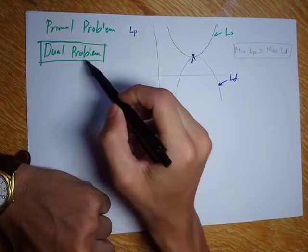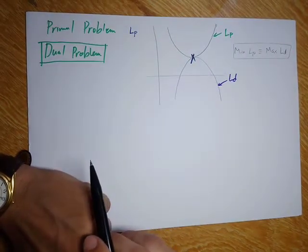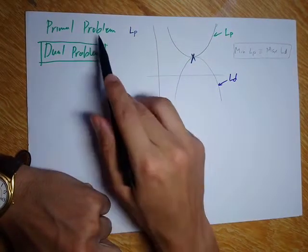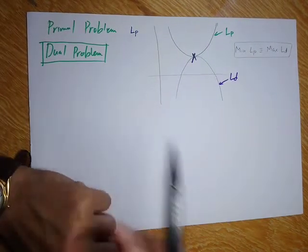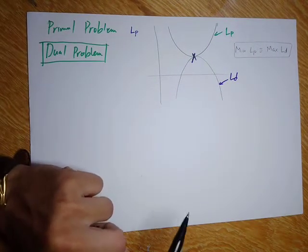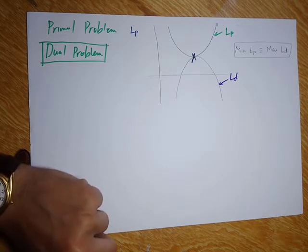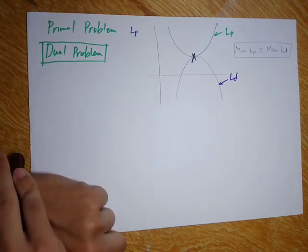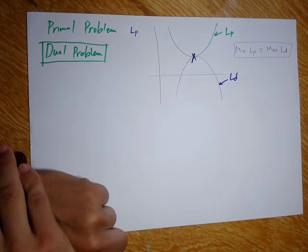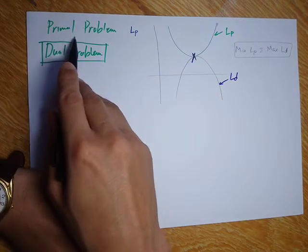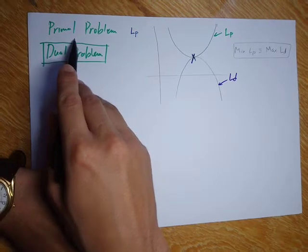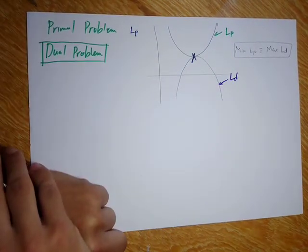Why is this useful? It is useful because it is computationally more efficient to solve the dual problem than the primal problem. This is why we care about it — it has to do with efficiency and convenience.